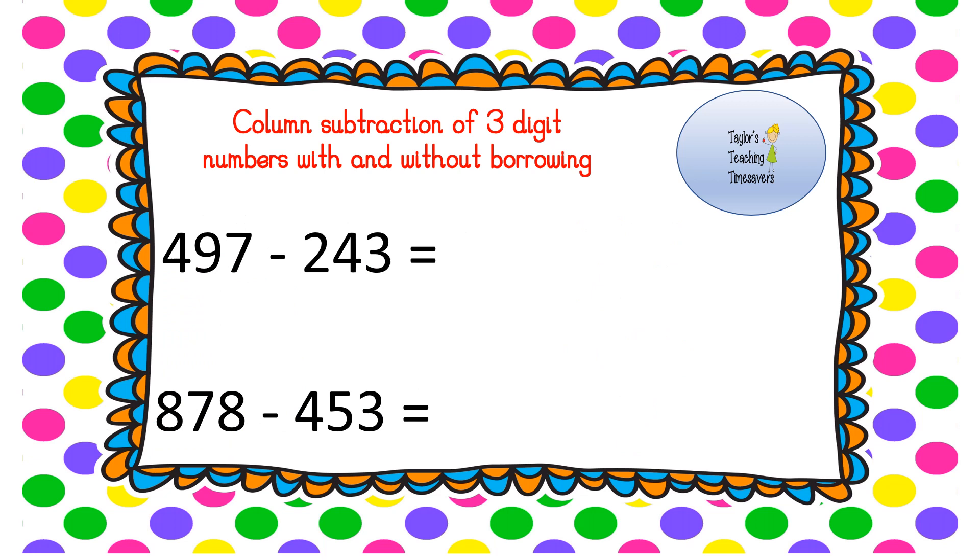Right, let's have a go without those base 10 pictures there. So 497 take away 243. Hundreds, tens and ones. So start with those ones. 7 take away 3 is 4. 90 take away 40, or 9 take away 4, is 5, 50. And 400 take away 200 is 200. Let's change the color for this next one so we can see it clearly.